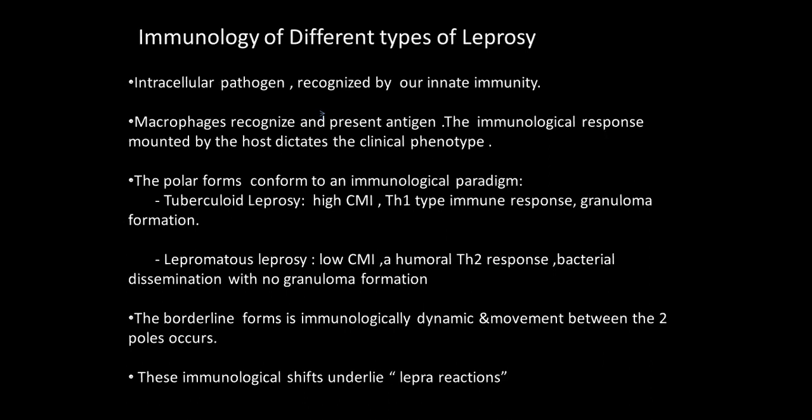Immunology: intracellular pathogen recognized by innate immunity — macrophages recognize and present the antigens, and the immunological response mounted by the host dictates the clinical phenotype. Tuberculoid has high cell-mediated immunity, Th1 immune response, and granuloma formation. Lepromatous has low cell-mediated immunity, a humoral Th2 response, bacterial dissemination with no granuloma formation. The borderline is immunologically dynamic and moves between the two poles — these immunological shifts underlie the lepra reactions.